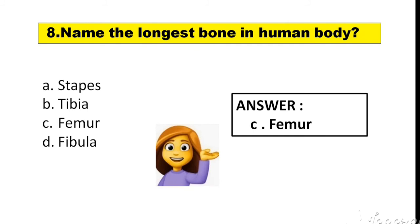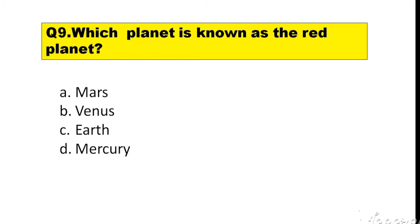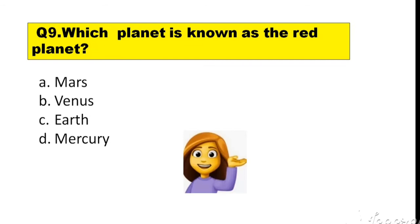Question number 9. Which planet is known as the red planet? Options are: A. Mars, B. Venus, C. Earth, D. Mercury. The right answer is option A — Mars.